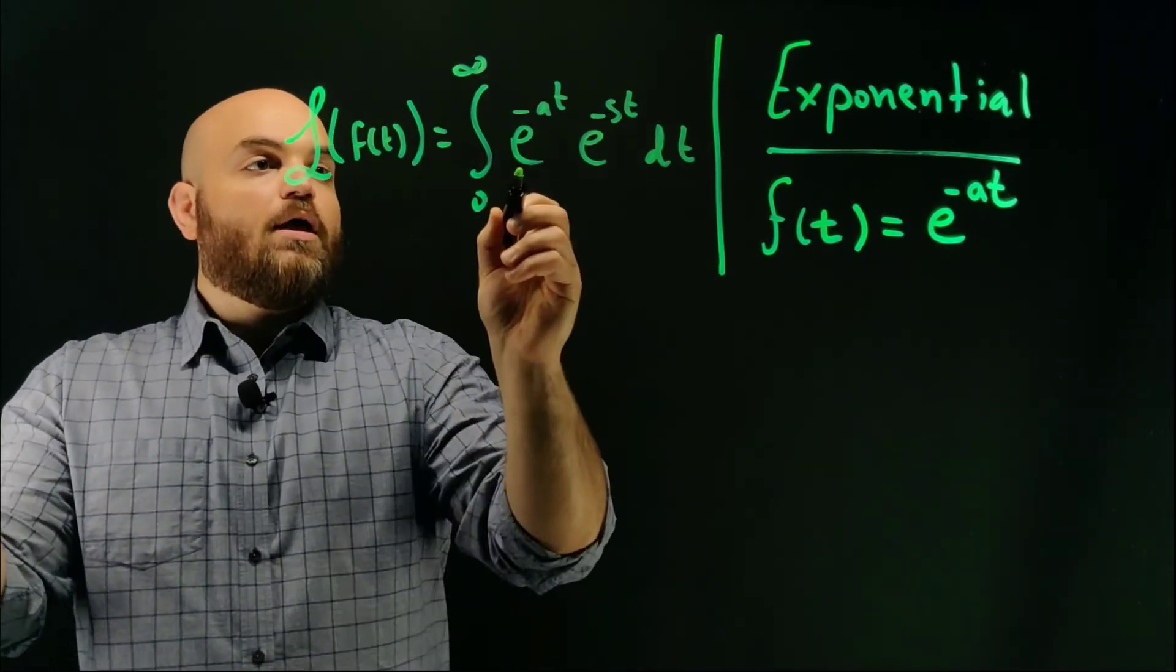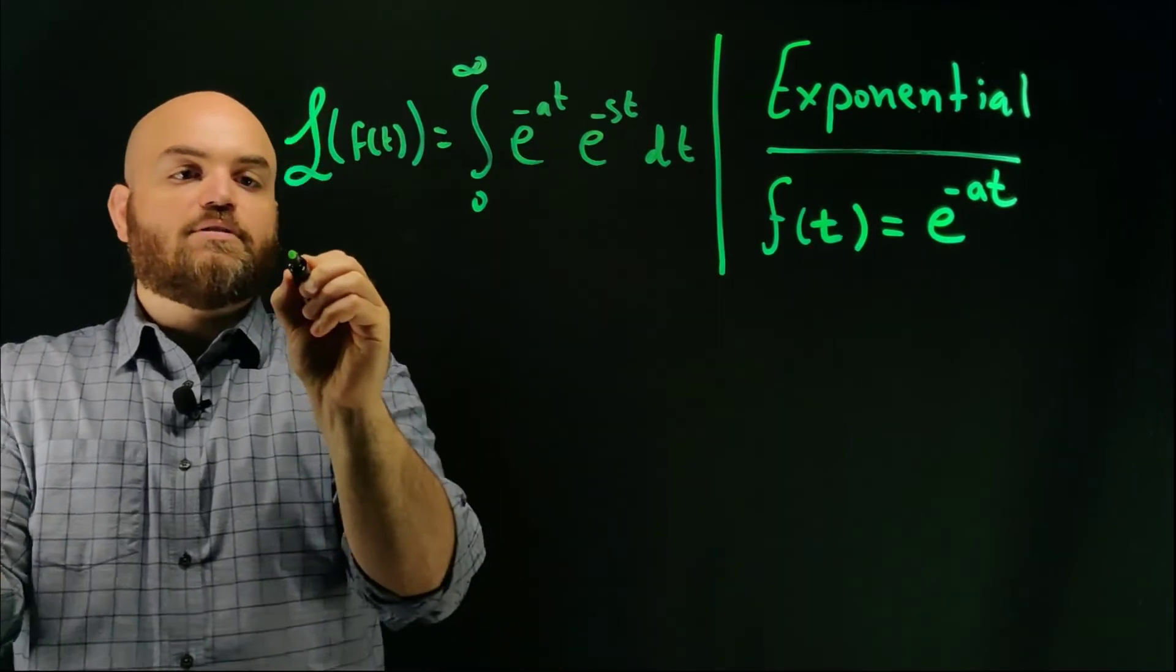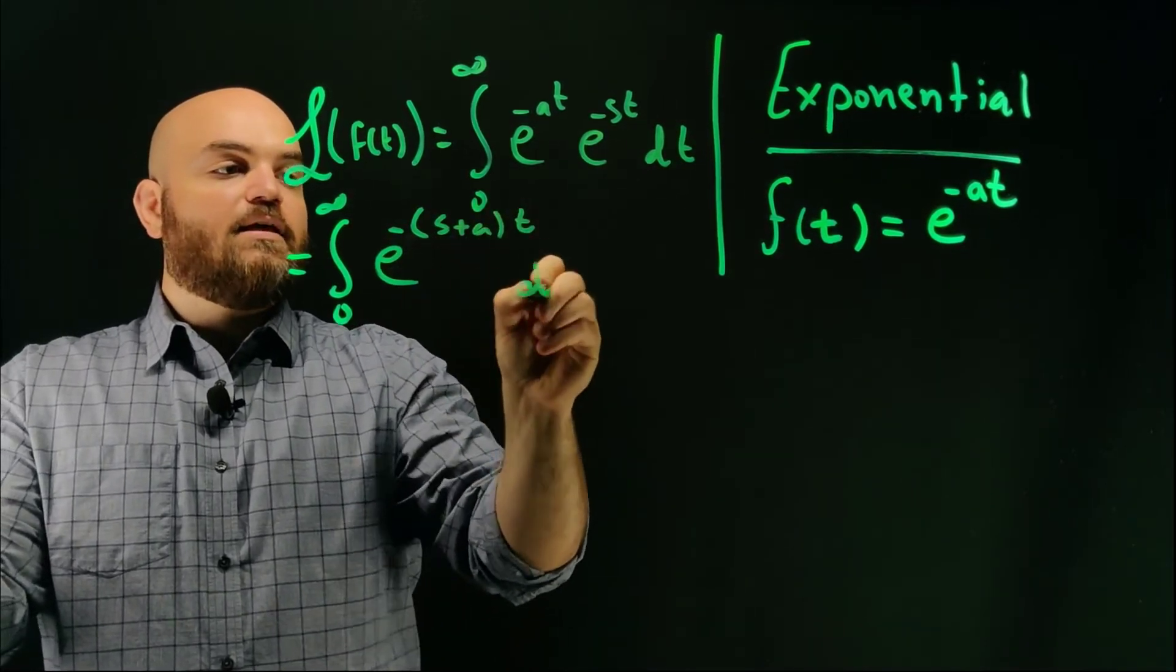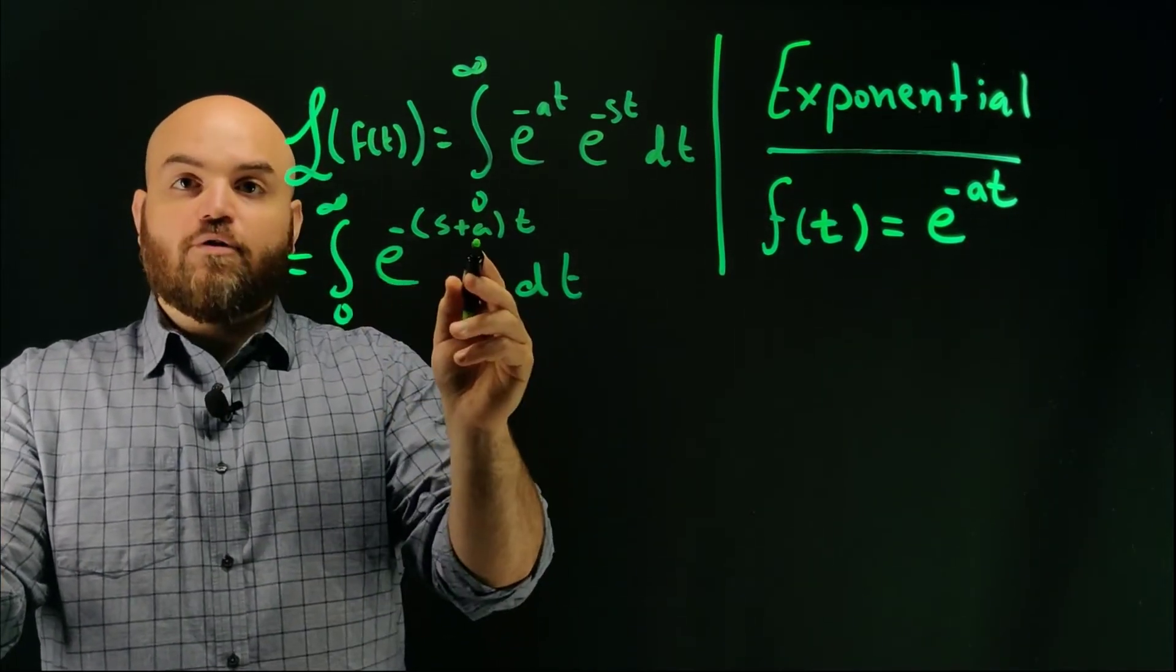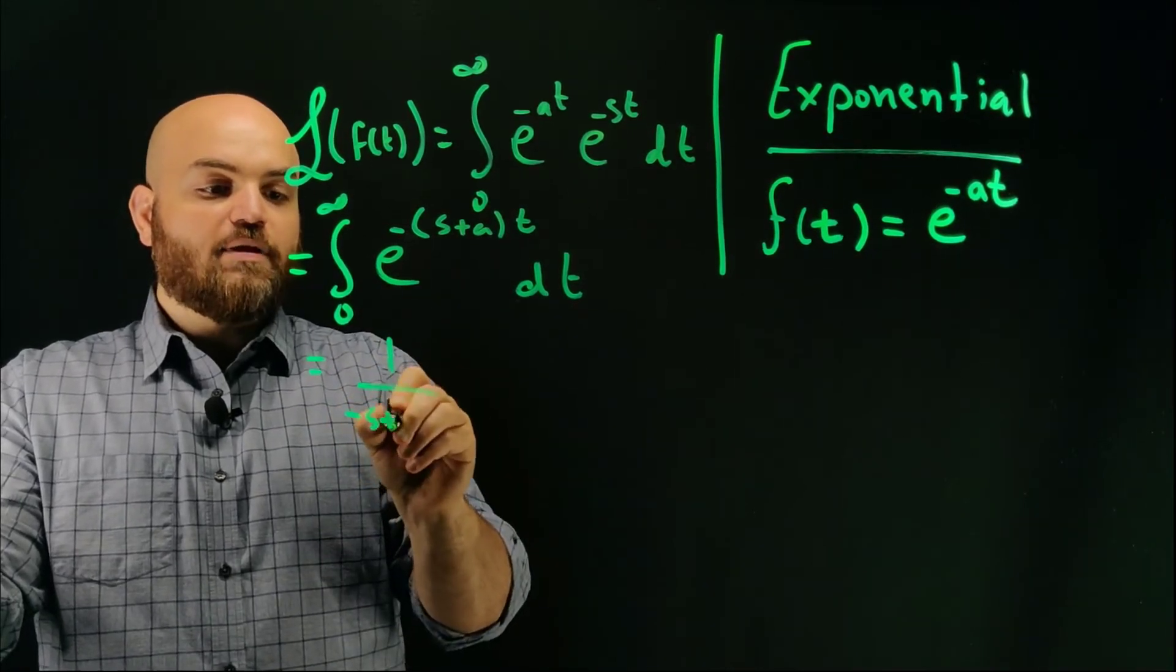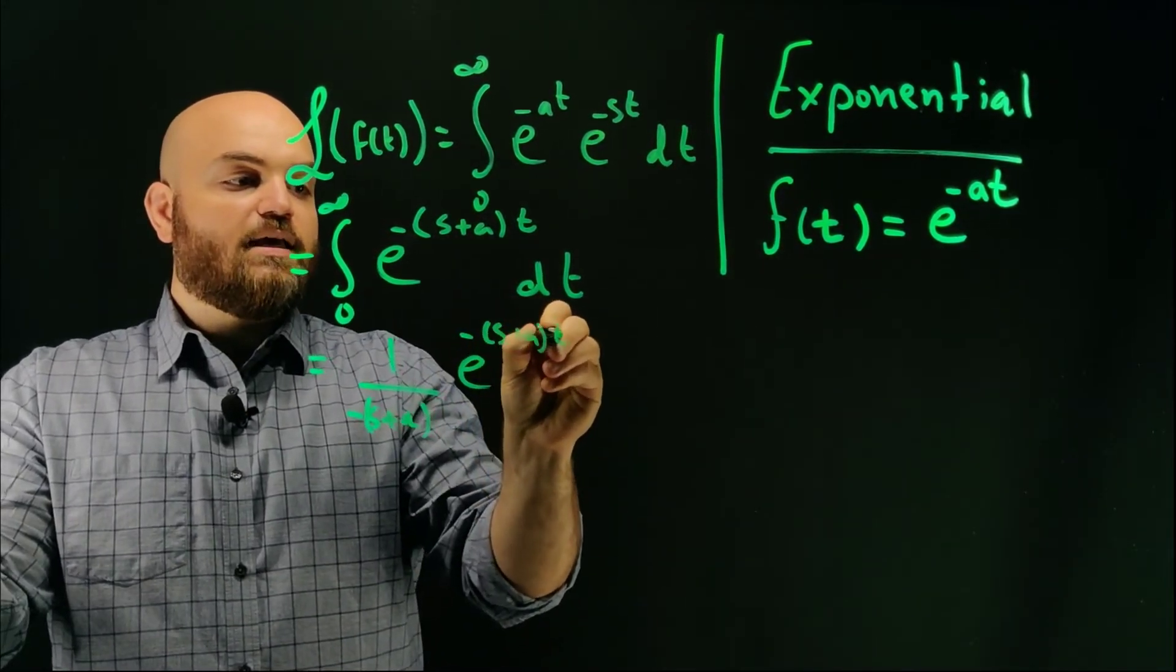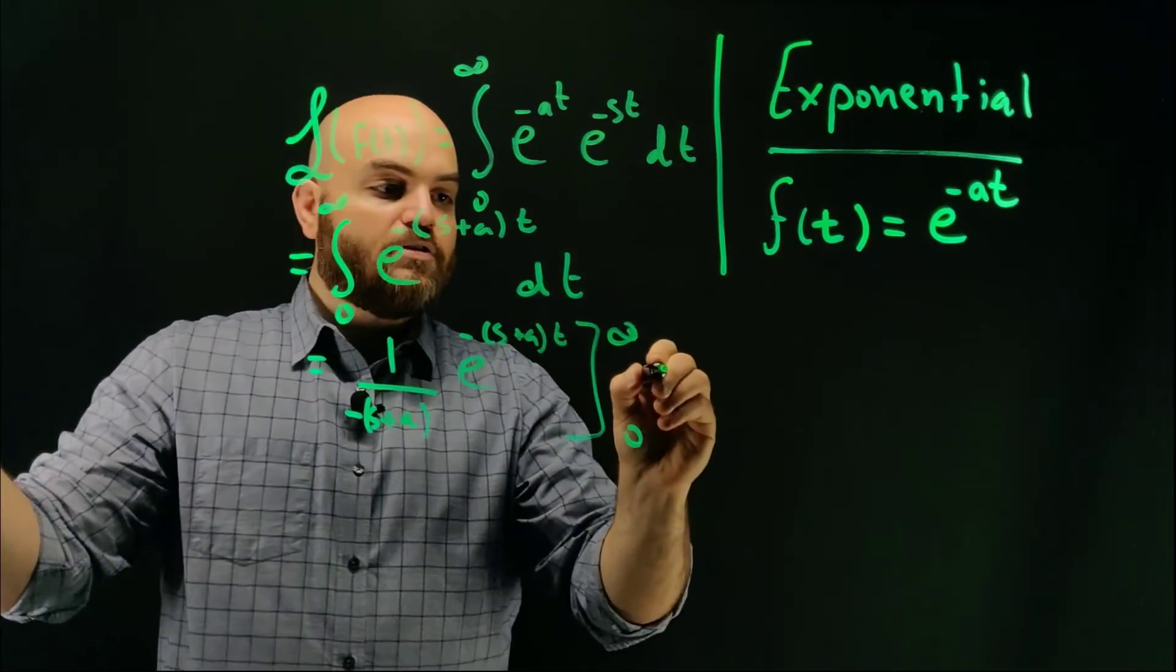And so when we have two exponentials multiplied, we can sum their exponents. So this can be written as zero to infinity e to the minus s plus a times t dt. And so I know that the integral for an exponent is essentially one over minus s plus a, which is this term right here, times e to the minus s plus a t. I need to substitute the bounds of the integral.